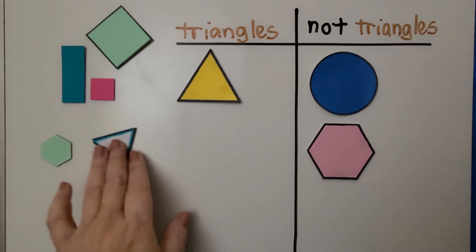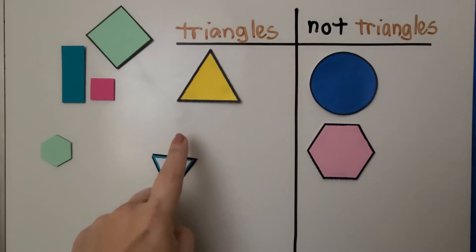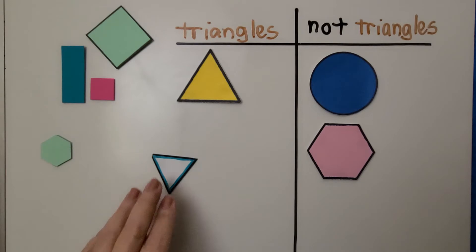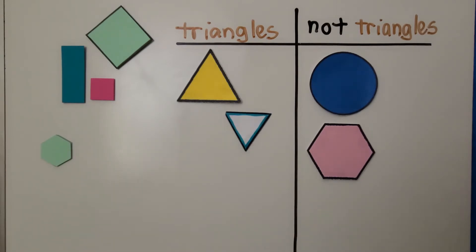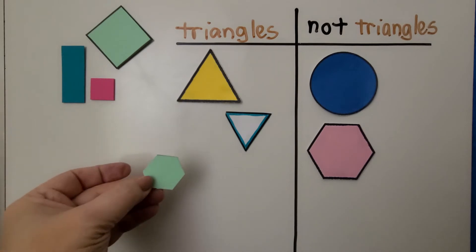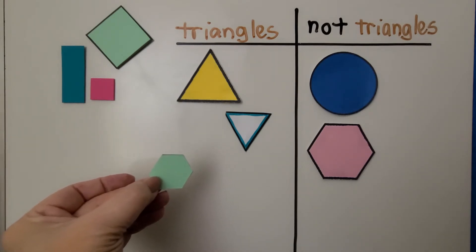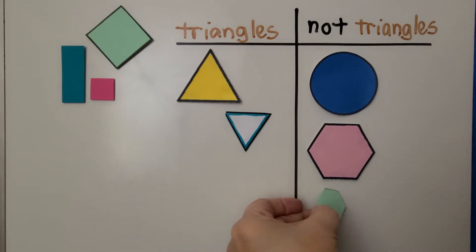Is this a triangle? It has one, two, three, four straight sides. If you said yes, you're right. That's a triangle. We can put it here. Is this a triangle? It has too many sides, doesn't it? That's not a triangle. That's another hexagon, actually, isn't it?